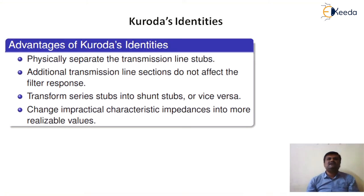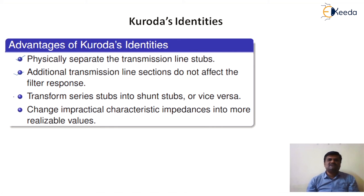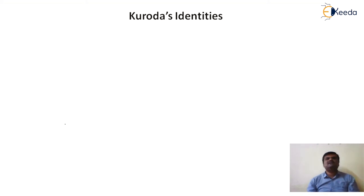By using these identities, we will get other alternatives also. First, we can physically separate the transmission line stubs by adding an extra transmission line, and even though we add an additional transmission line section, it does not affect the filter response. At the same time, you can transform series stubs into shunt stubs, or shunt stubs to series stubs, and change impractical characteristic impedance into a realizable value. Generally, four Kuroda's identities are used for these purposes.